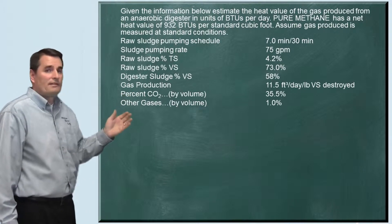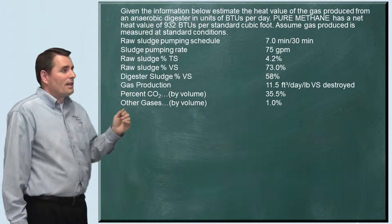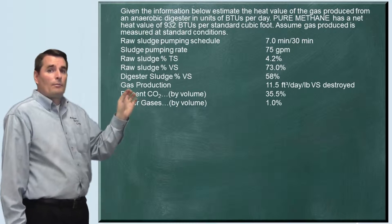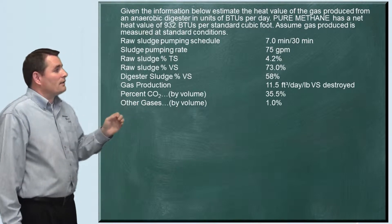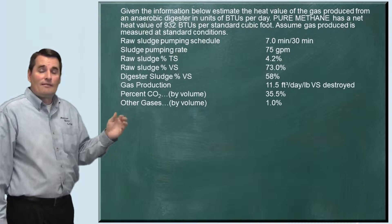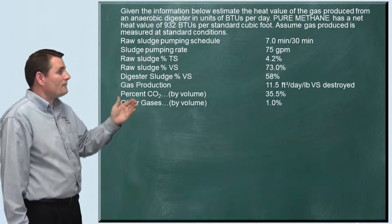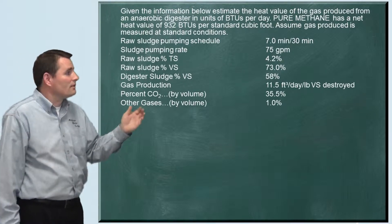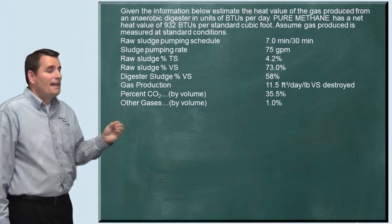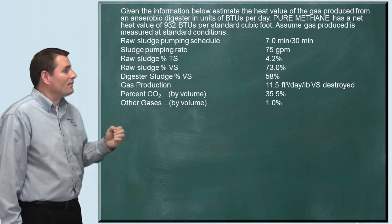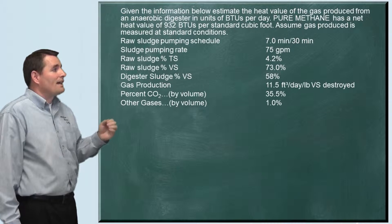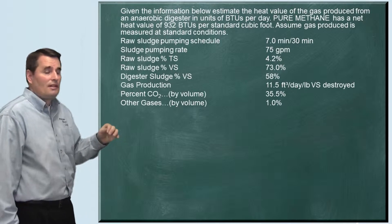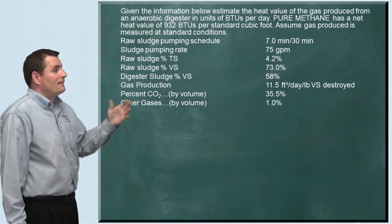They gave us the raw sludge pumping schedule: 7 minutes every 30 minutes, meaning for every half hour they're pumping for 7 minutes. The sludge pumping rate is 75 gallons per minute. They also gave us the total and volatile solids for the raw sludge: total solids of 4.2% and the volatile percent is 73.